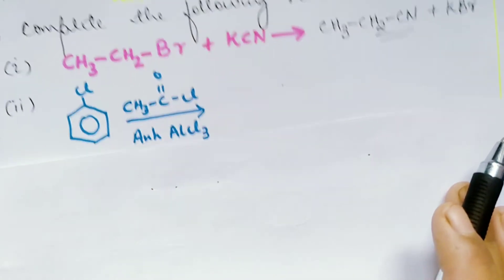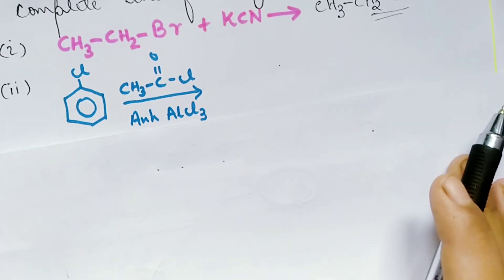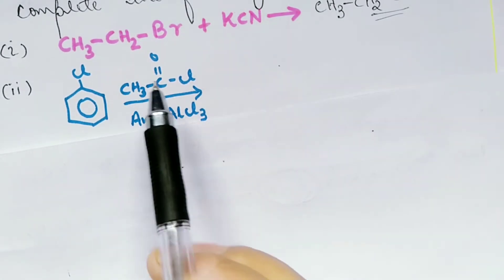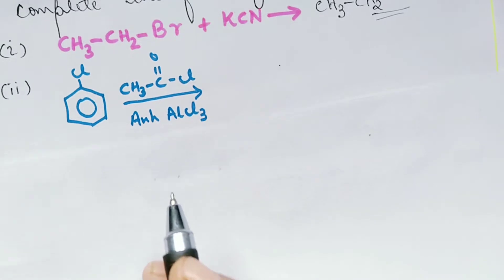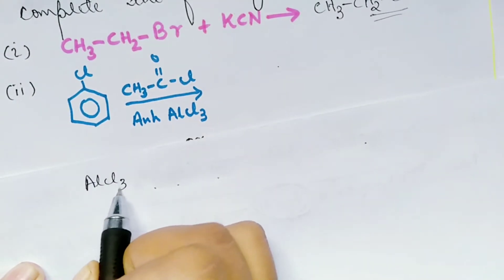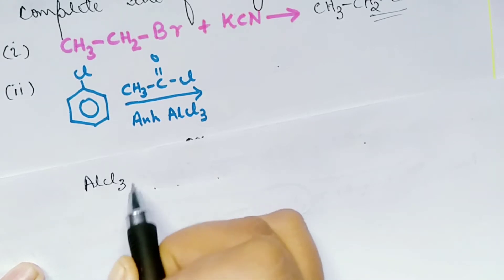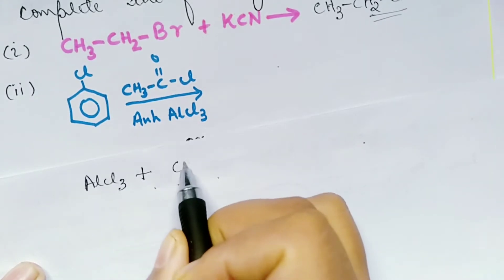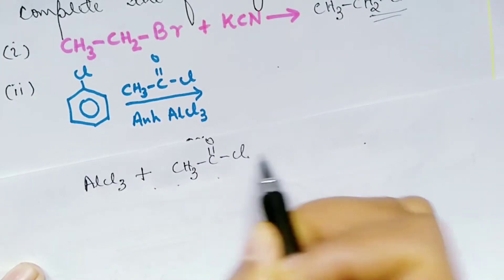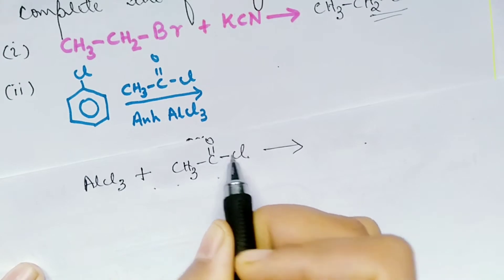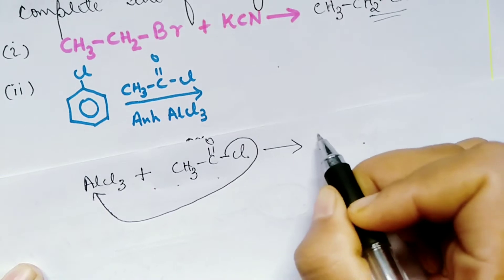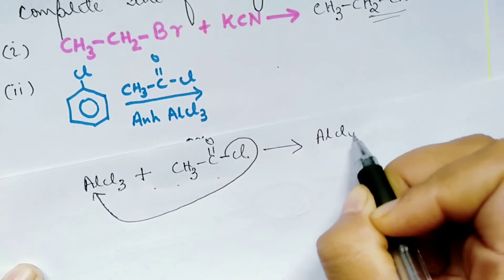Now the second part: we have chlorobenzene and anhydrous aluminium chloride with acetyl chloride. This is a Friedel-Crafts acylation. Aluminium chloride is a Lewis acid — it can accept electrons. The Cl⁻ from acetyl chloride goes to aluminium, giving AlCl₄⁻, and we get an acylium electrophile (CH₃C≡O⁺).